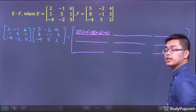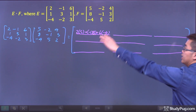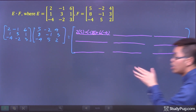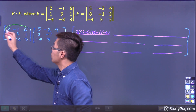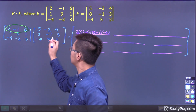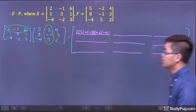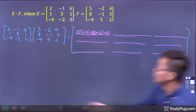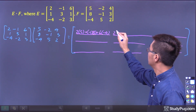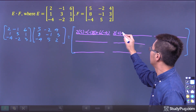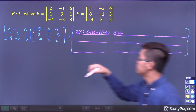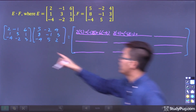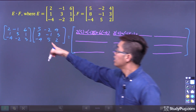Now the second entry is in the first row and second column. So we take the dot product of the first row and second column. That gives us: 2 times negative 2, plus negative 1 times negative 1, plus 6 times 5.